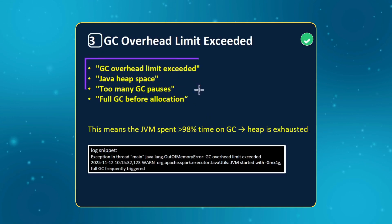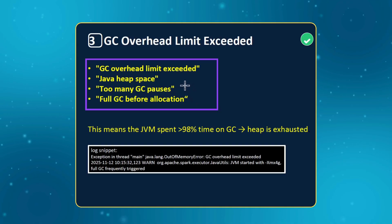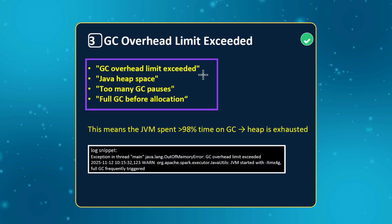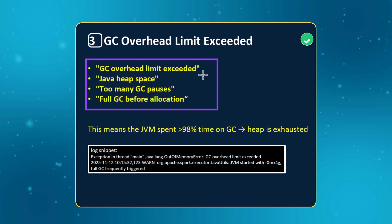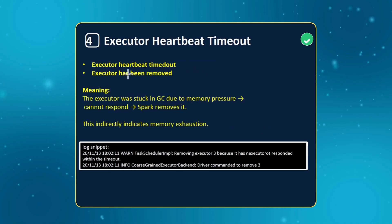The third one is GC overhead limit exceeded. This is mostly directly related to out of memory error. If you see Java heap space issues, too many GC pauses, or GC overhead limit exceeded, this is directly related to memory issues. The JVM will spend most of its time — like 90 to 95 percent — trying to clean up the heap. In such cases, you just need to increase the memory and rerun your job, and it can solve the problem.